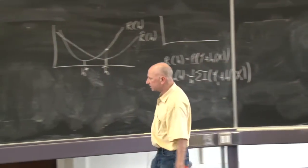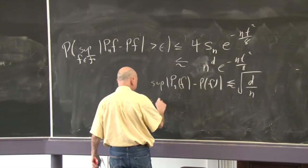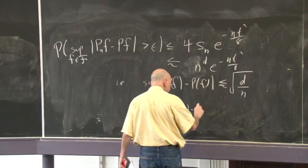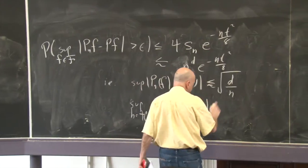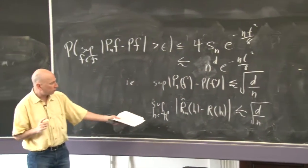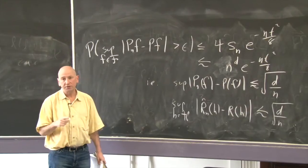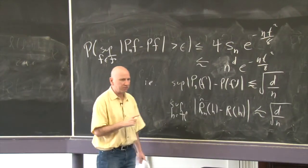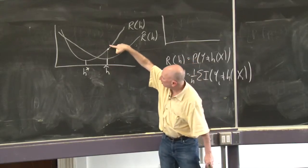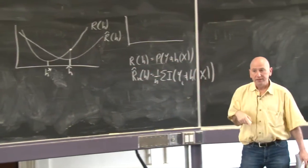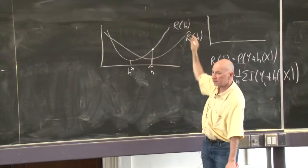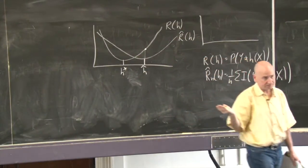What does the VC theorem say? It says that the sup over all h's of the estimated risk minus the true risk is small - of order epsilon_n - with high probability. Here's why it's important that it be true over the sup: we're going to be evaluating the risk at a random choice - the classifier we choose is random. We want to make sure that r hat minus r is close at the random one. Since we don't know where the random one's going to be ahead of time, it better be true everywhere. If it's uniformly close, then it's close at any h, including a random one.